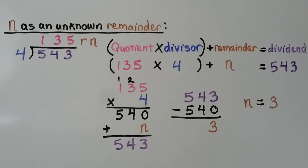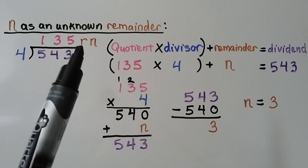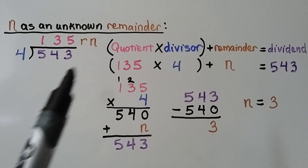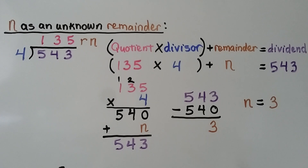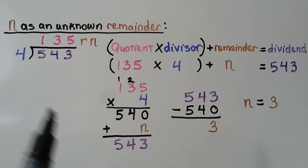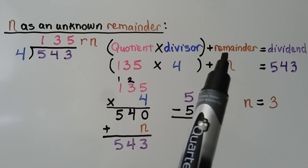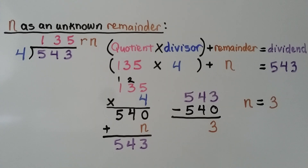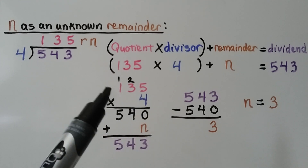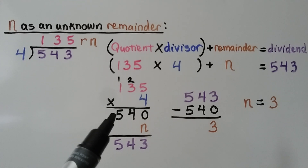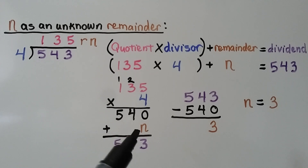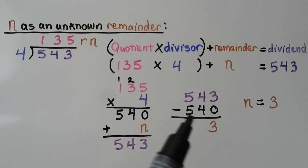Now n is an unknown remainder. We have 543 divided by 4, and our quotient is 135 with a remainder of n. We know the quotient times the divisor, plus the remainder, should equal the dividend. 135 times 4 is 540. But the dividend is 543, so we ask: what number is missing to make 540 become 543? 543 minus 540 is 3, so the remainder n must equal 3.